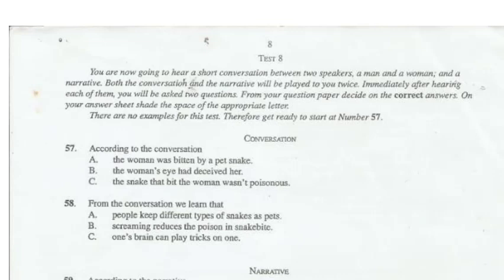Test 8. You are now going to hear a short conversation between two speakers, a man and a woman, in a narrative. Both the conversation and the narrative will be played to you twice. Immediately after hearing each of them, you'll be asked two questions. From your question paper, decide on the correct answers. On your answer sheet, shade the space of the appropriate letter. There are no examples for this test. Therefore, get ready to start at number 57.